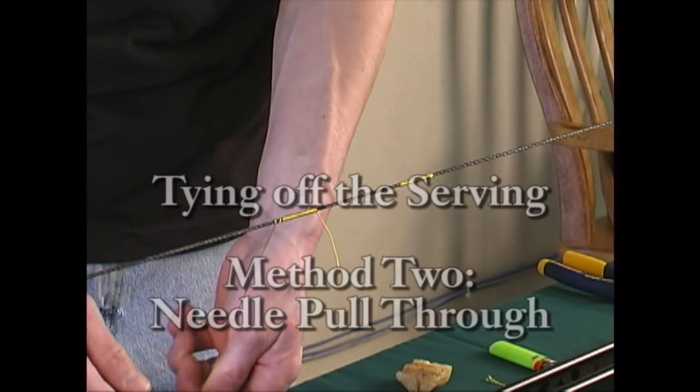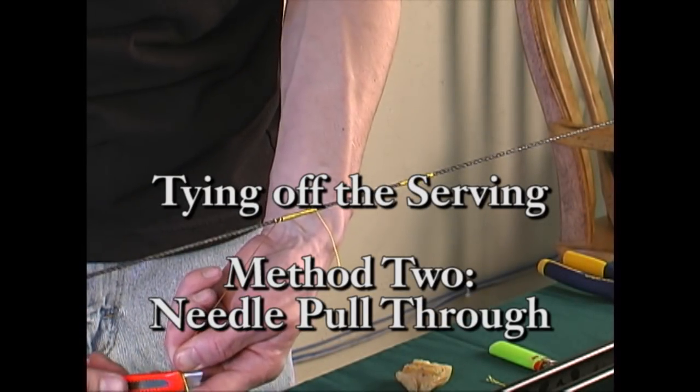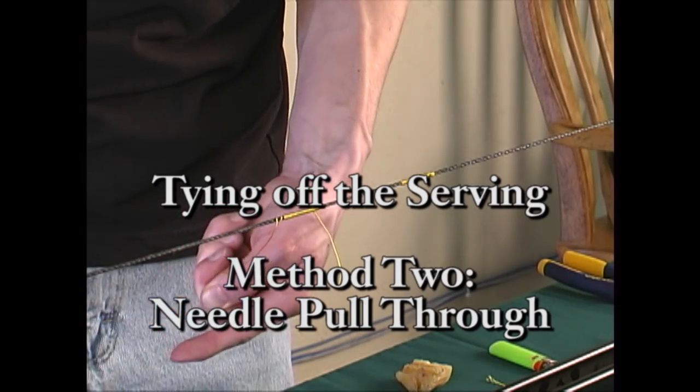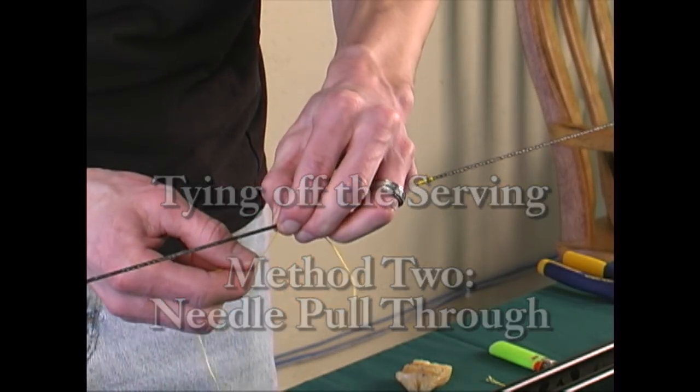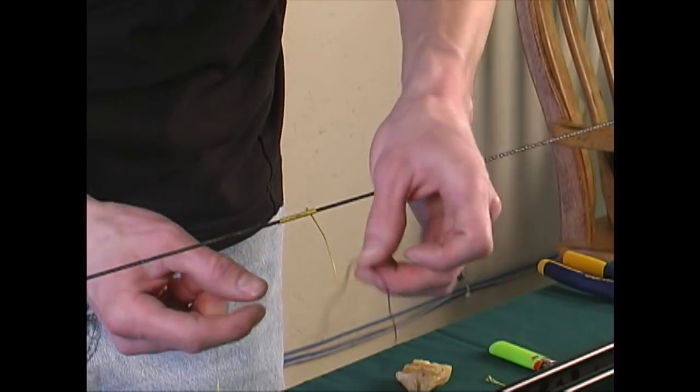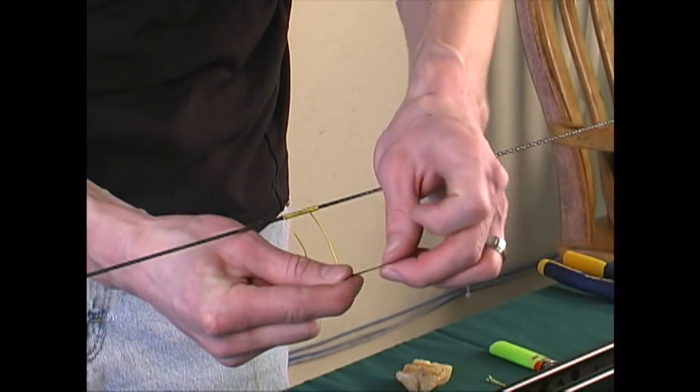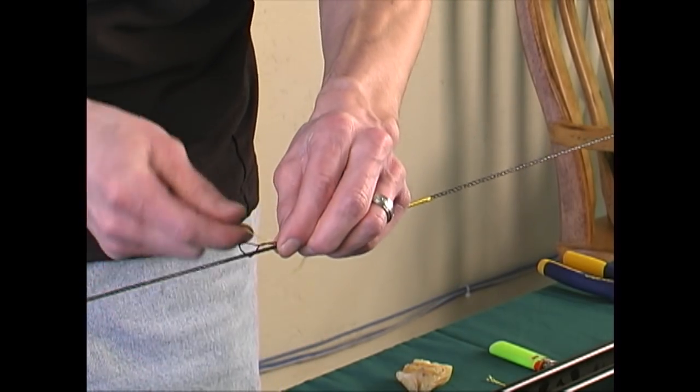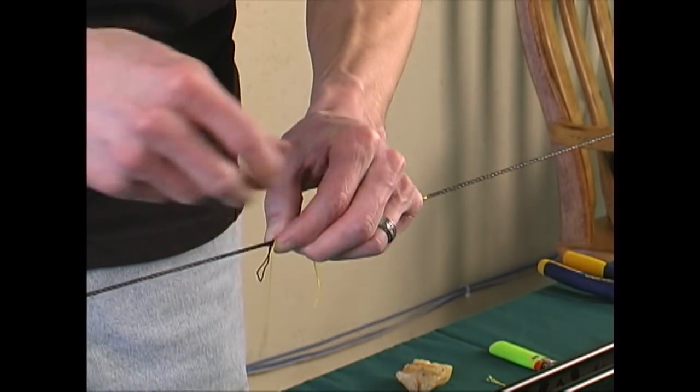A second method for tying off your serving is the needle pull-through method. Cut off 8 to 10 inches of serving from the jig as you would before. Now with a separate piece of serving material, roughly 4 to 6 inches or other material, create a string needle, basically making sure there is an open end to it.